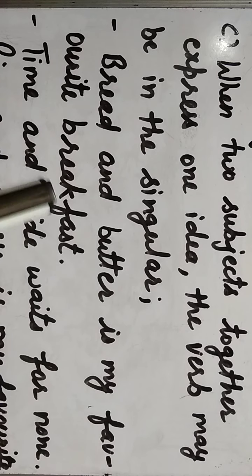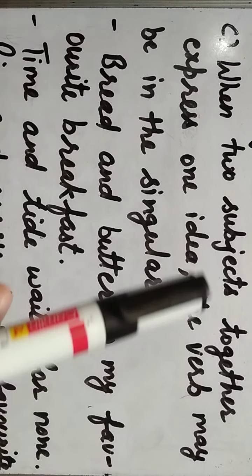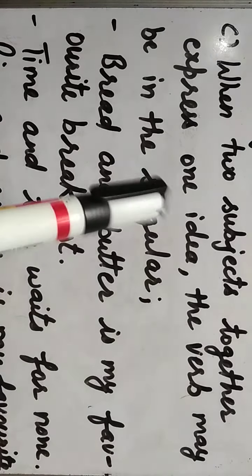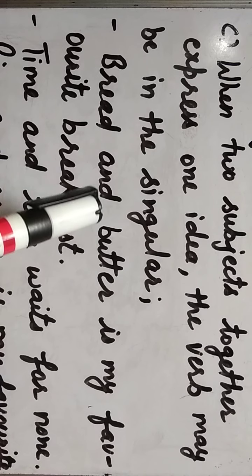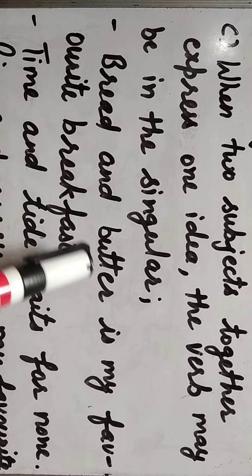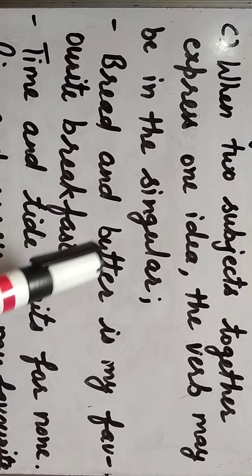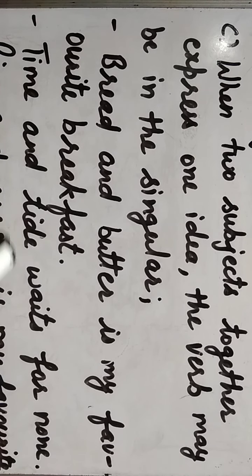Next: when two subjects together express one idea, the verb may be singular. 'Bread and butter is my favorite breakfast.' Bread and butter दोनों साथ-साथ use होते हैं — same idea express करते हैं, इसलिए singular verb 'is.' 'Time and tide waits for none' — time और tide में similarity है, एक ही idea, इसलिए 'waits' — singular verb use हुई।